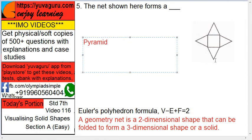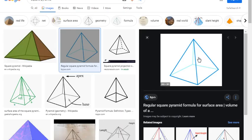The net shown here forms a net, that means this two-dimensional. If you join all these, it will form a pyramid. This is a pyramid, which we see in Egypt.